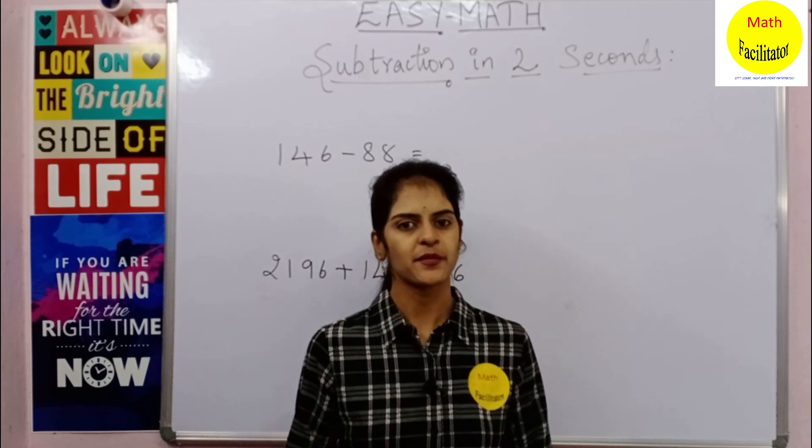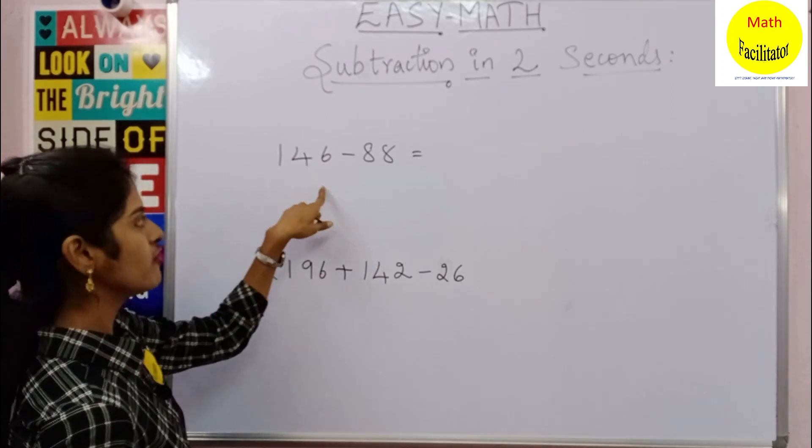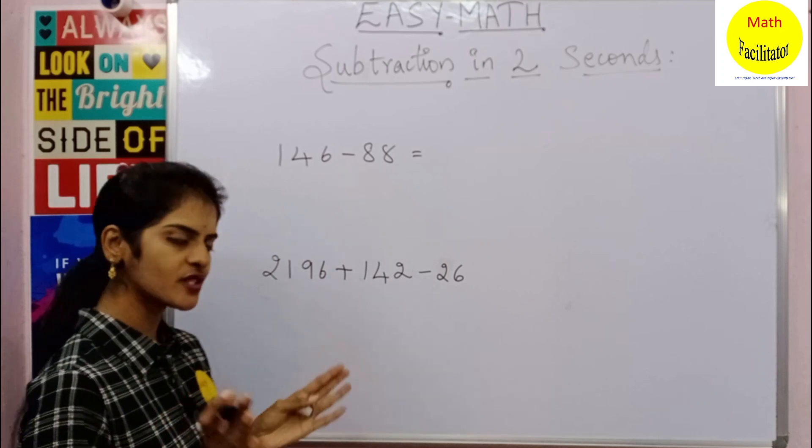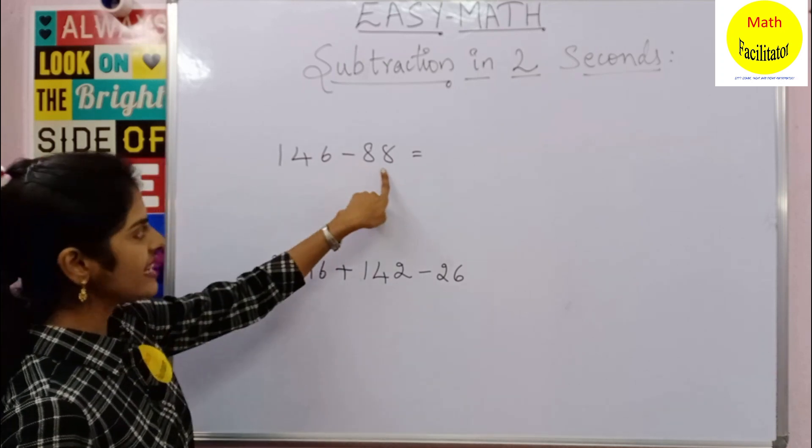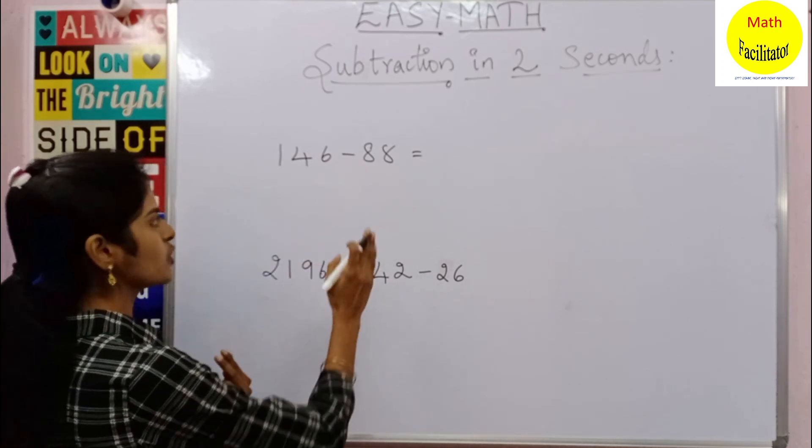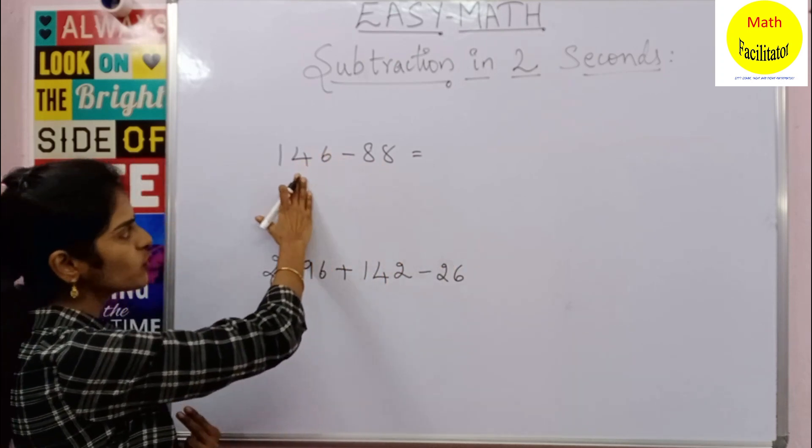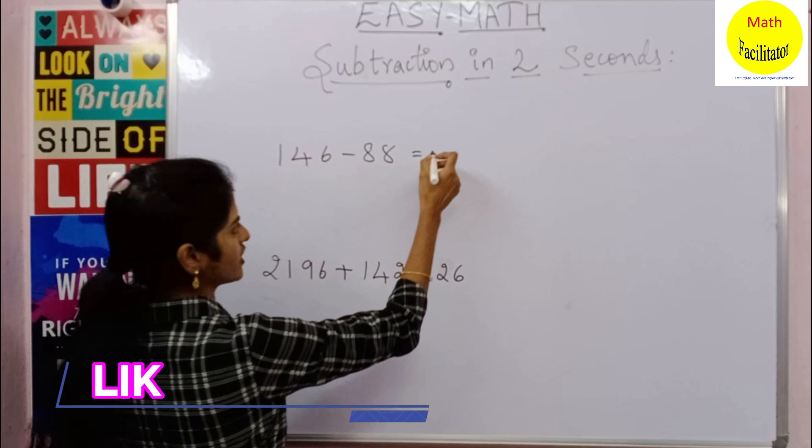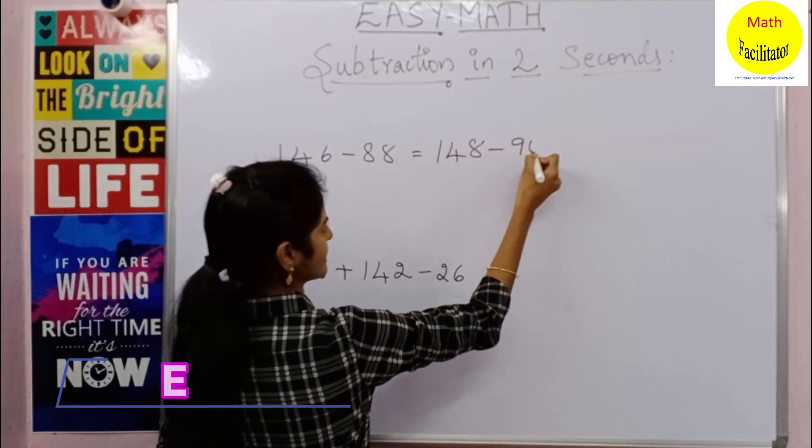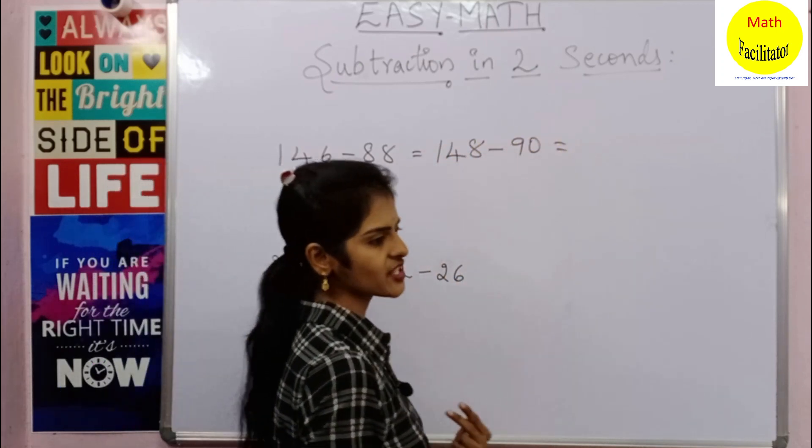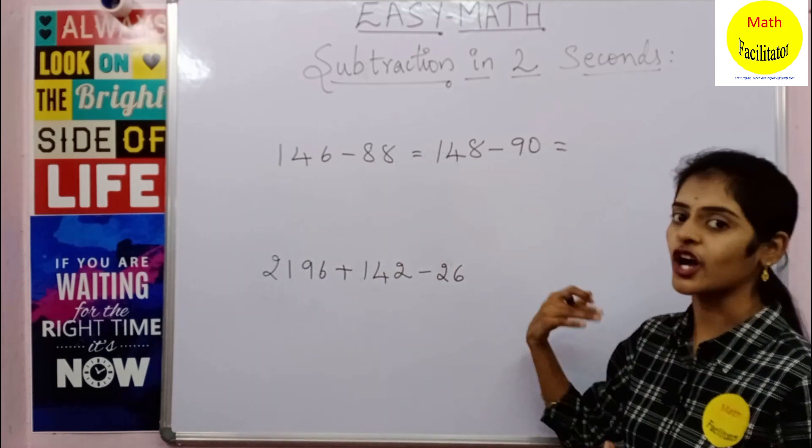Now 146 minus 88, using the same concept. 88 is closer to 90, so you can add 2 to get 90. Similarly, you will add 2 to the first number also. So 146 plus 2 is 148 minus 90.